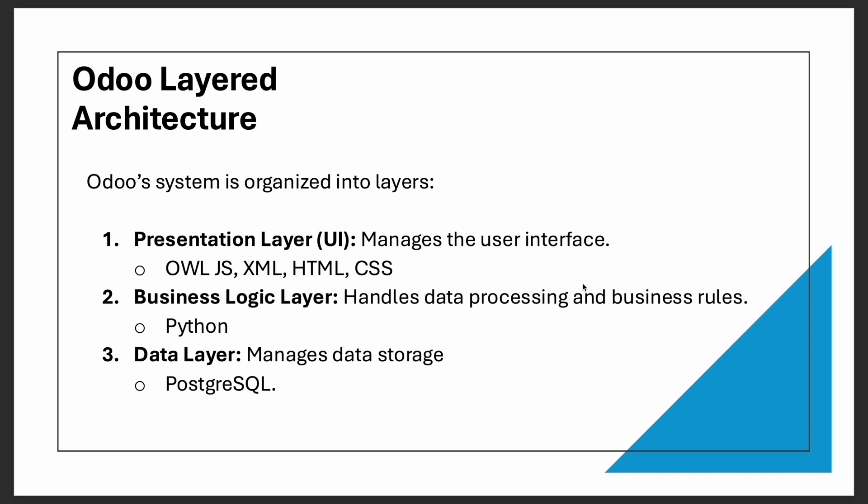Odoo's system is organized into three layers. First is the presentation layer — the UI that manages the user interface, using languages such as JavaScript, XML, HTML, and CSS. Second is the business logic layer, which handles data processing and logic, where Python is used. Third is the data layer, which manages data storage using the PostgreSQL database.